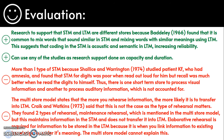Another weakness is that the multi-store model states the more you rehearse information, the more likely it is to go into long-term memory. Craik and Watkins in 1973 argued this is not the case, because the type of rehearsal is what matters. They identified two types: maintenance rehearsal, which only maintains information in short-term memory and does not transfer it to long-term memory; and elaborative rehearsal, which is needed for long-term storage because it involves linking information to existing knowledge or considering what the information means. The multi-store model cannot explain this.